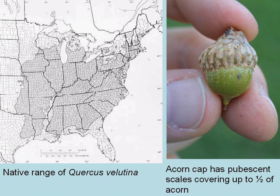The acorn cap on black oak has pubescent scales, and the scales cover a third up to one half of the acorn. As you can see, the range of black oak is very wide, and again it's pronounced Quercus velutina.